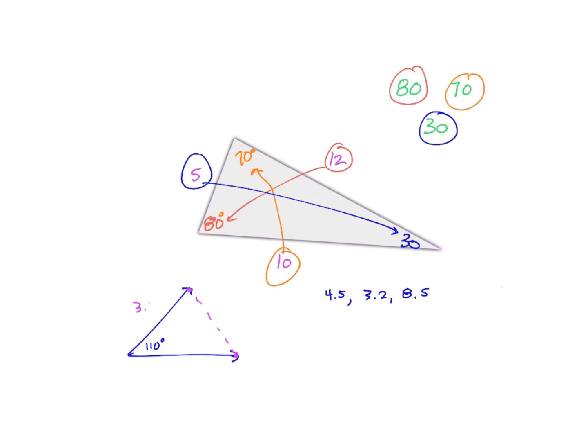then the 3.2 and the 4.5 have to be the sides of that angle. That's the idea. The two smaller sides will have to be the sides of that angle, because what that will leave you is, it'll leave you the 8.5 as this third side if you were ever to create a triangle out of that.